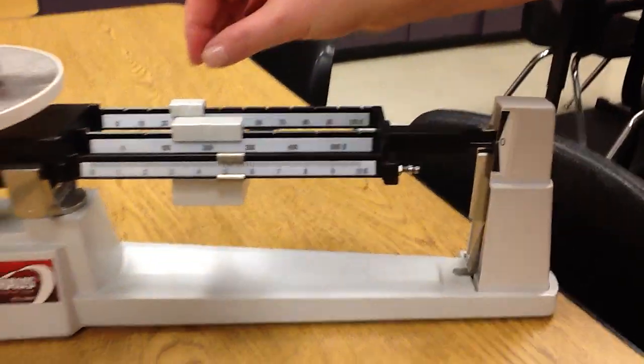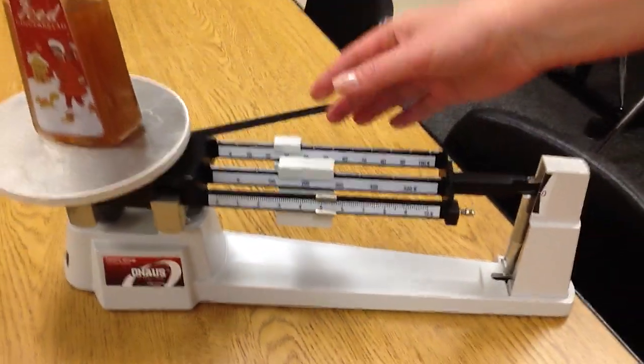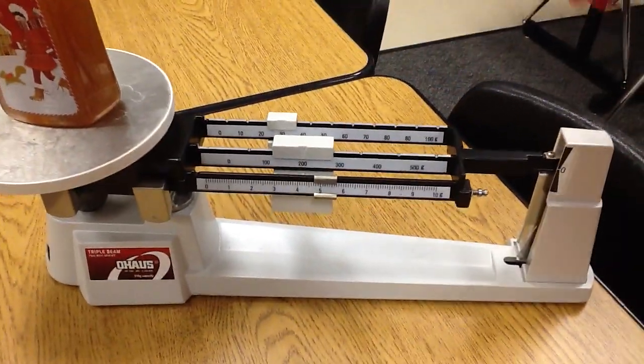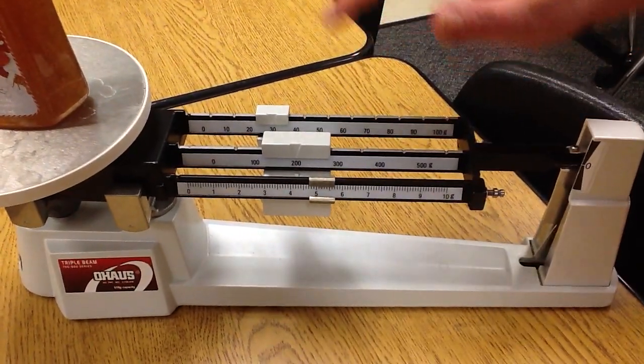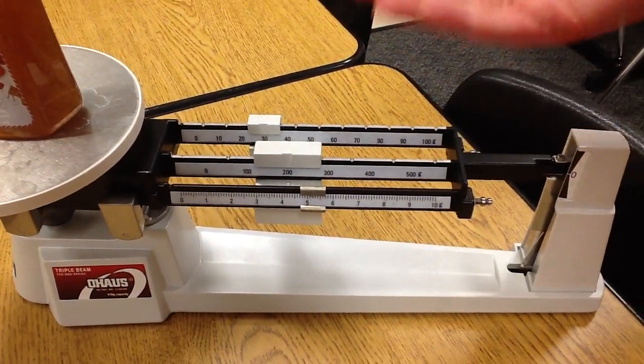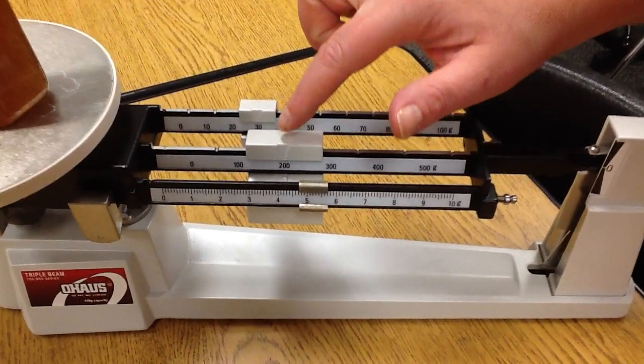Now, we have our riders on our sliders, but now we need to see how much this wonderful ice gingerbread hand sanitizer measures. So just like money, you're going to start with the larger first. We're going to count 200.